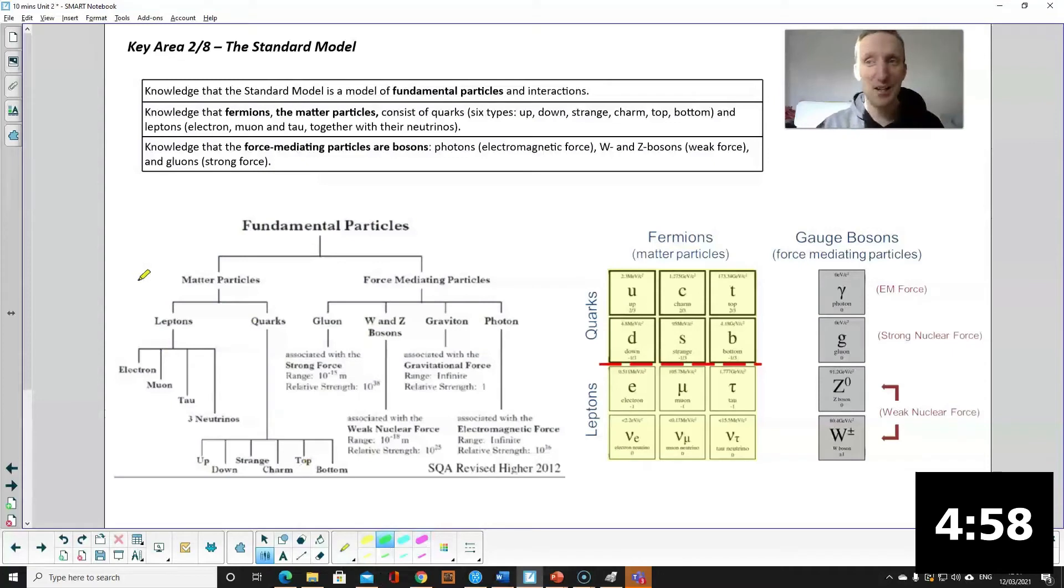Okay that leads us on to the standard model which is a collection of fundamental particles. Particles that cannot be subdivided further. We now know that the proton and the neutron can be subdivided into quarks which is why they don't appear on the standard model.